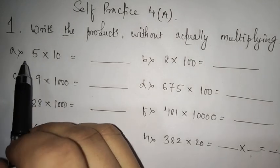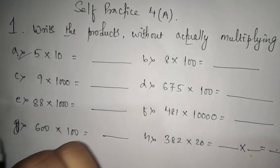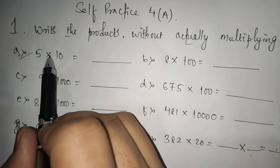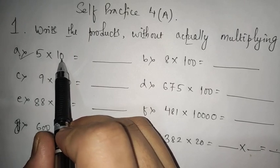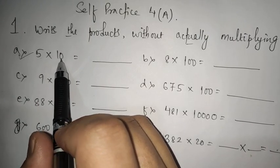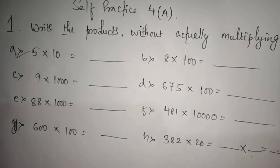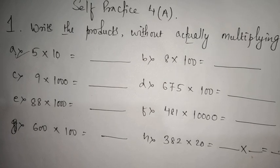Here you can see the first question is 5 × 10. 5 into 10 means 5 is getting multiplied with 10. Whenever you have to multiply any number with 10, then put zero on the right hand side of the given number.